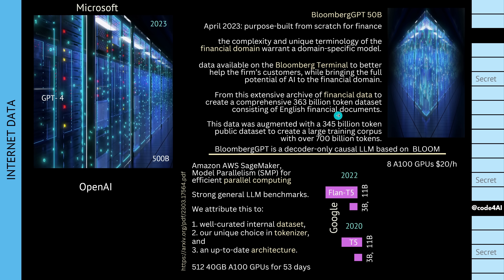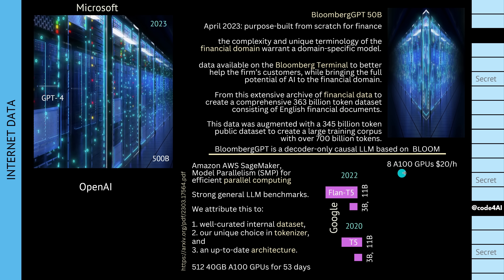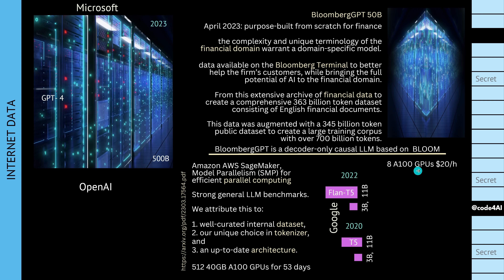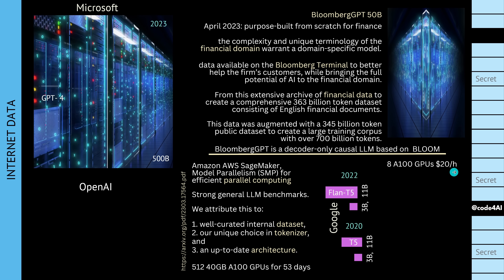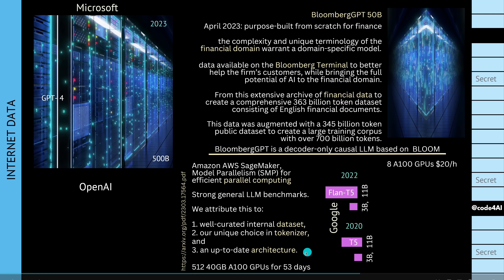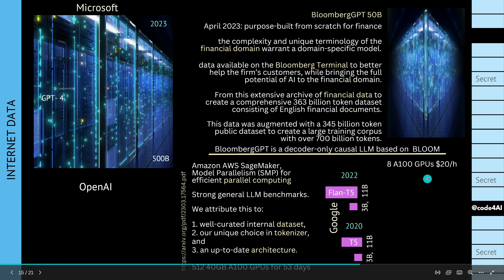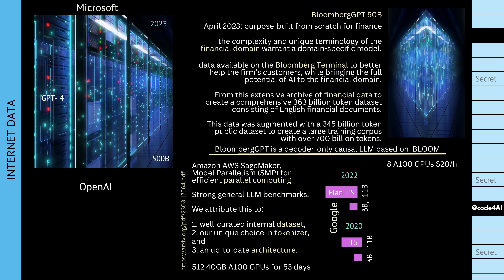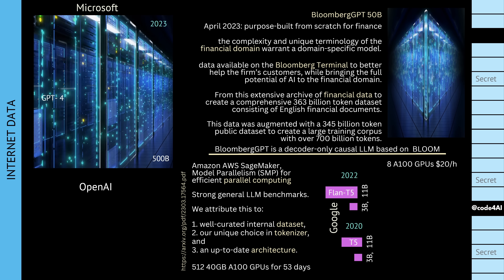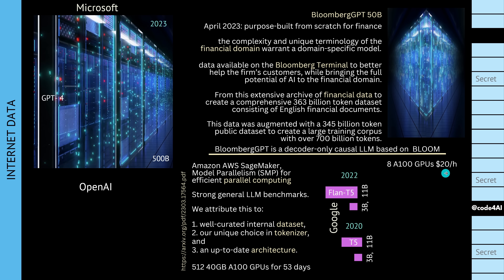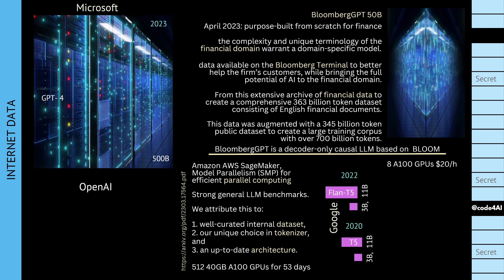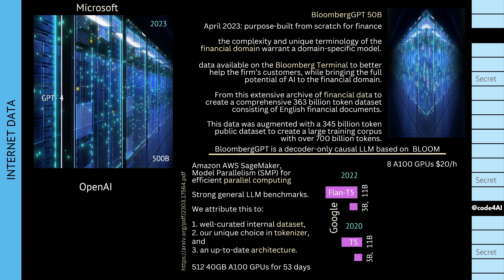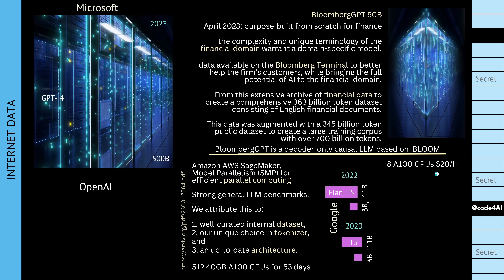Depending on your region and urgency, 8 A100 GPUs cost roughly $20 per hour. Running 512 GPUs for 53 days, in the worst case you spend about $1.5 million to create your own top-secret, perfectly focused, optimized financial LLM — the first in the world. One and a half million dollars for the complete financial sector in an LLM is less than the annual bonus of one Wall Street broker. This shows the power of AI in the marketplace.